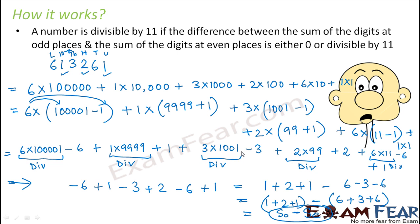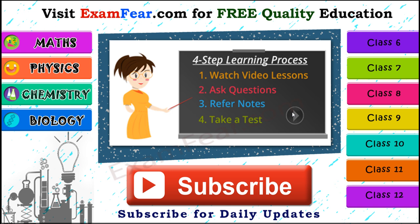So this is the reason that whenever you are asked to find if a number is divisible by 11, we find the sum of digits at odd places, find the sum of digits at even places, and subtract them to see if the difference is either 0 or divisible by 11. With this, we have covered the divisibility tests of all numbers from 2 to 11. Thank you.